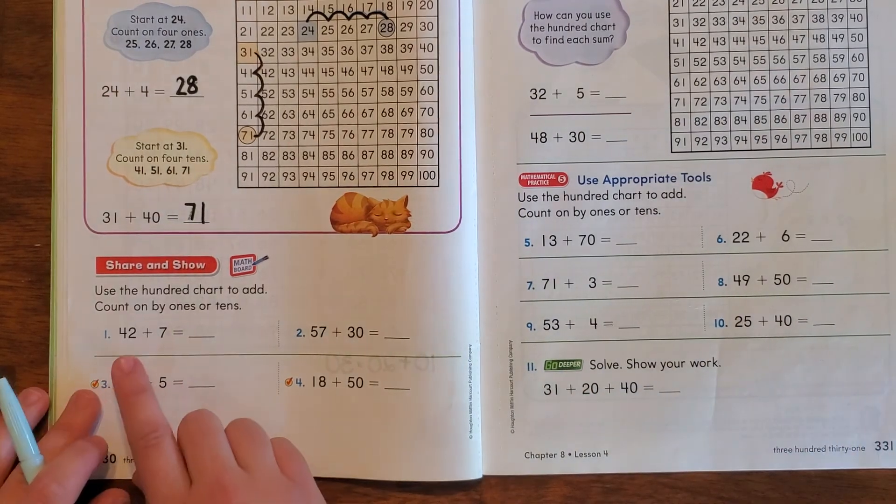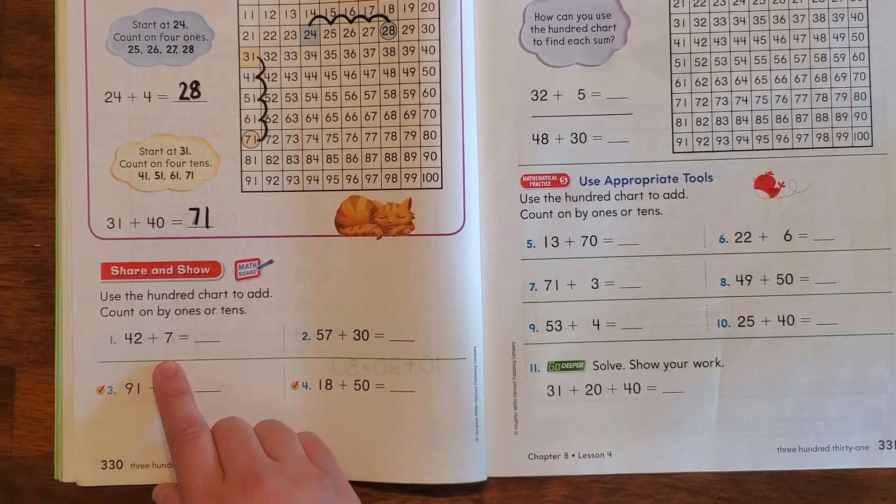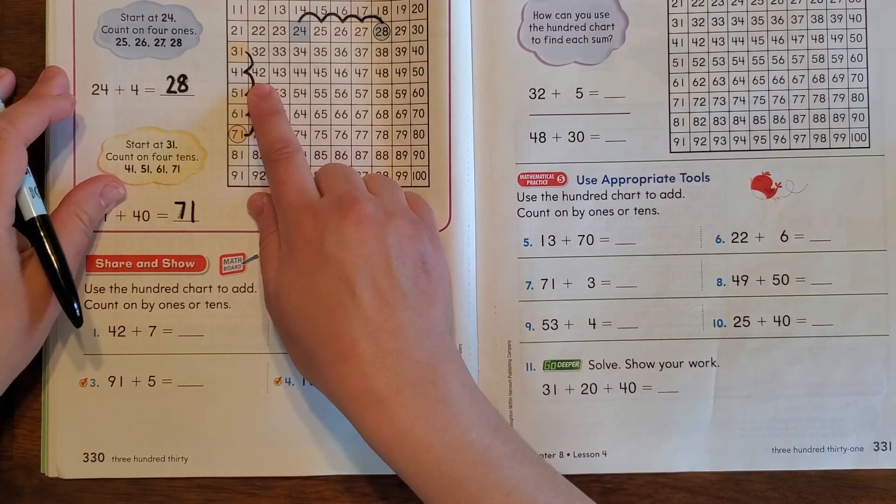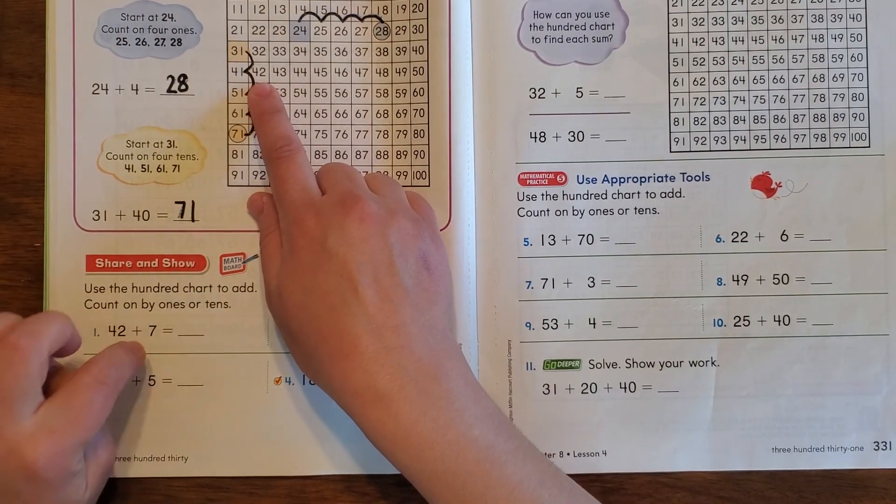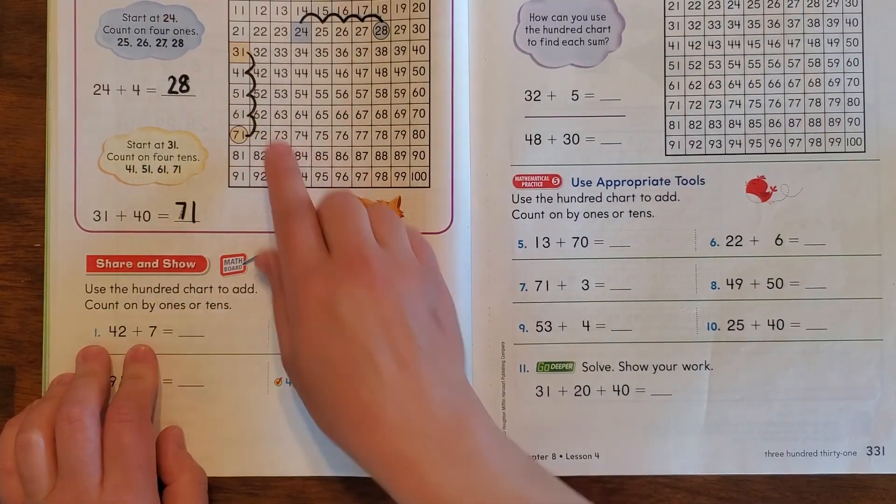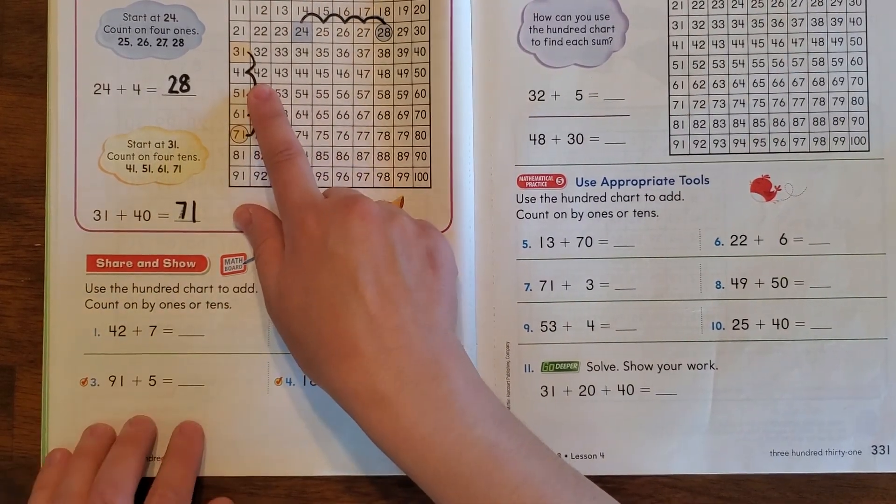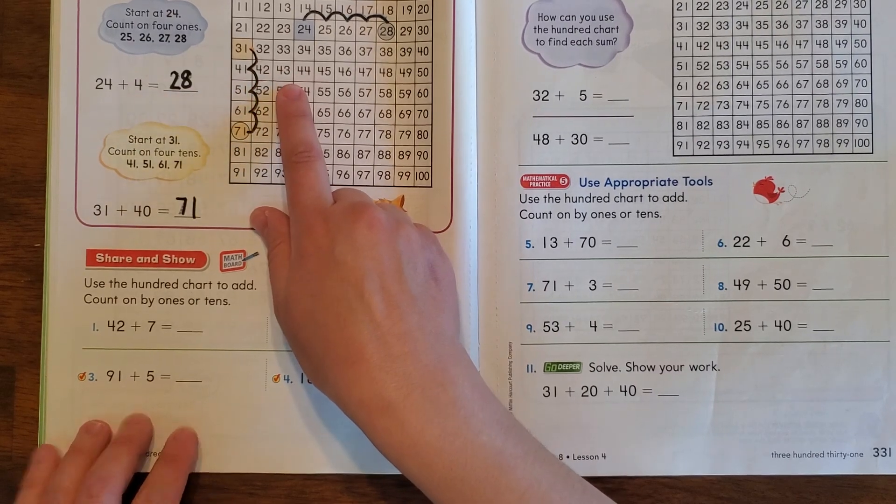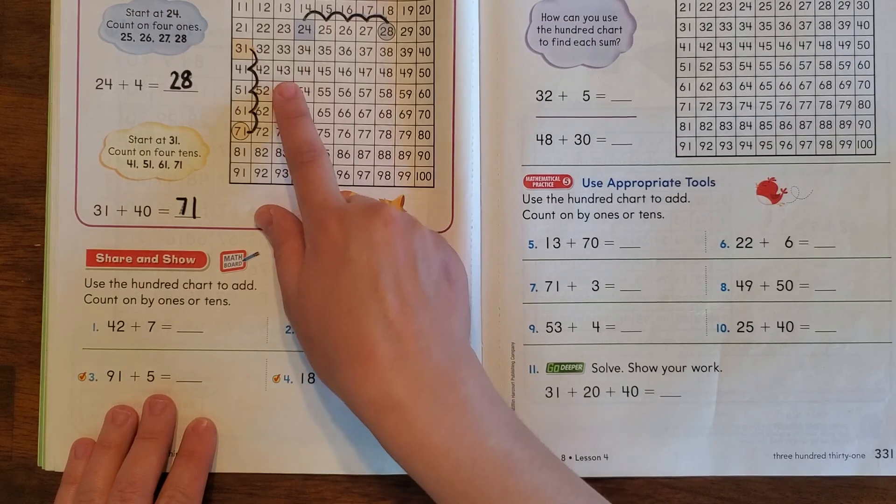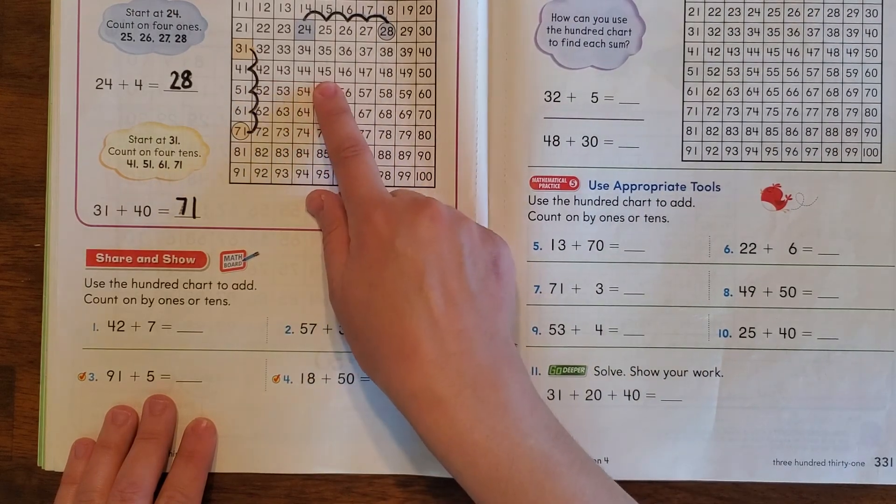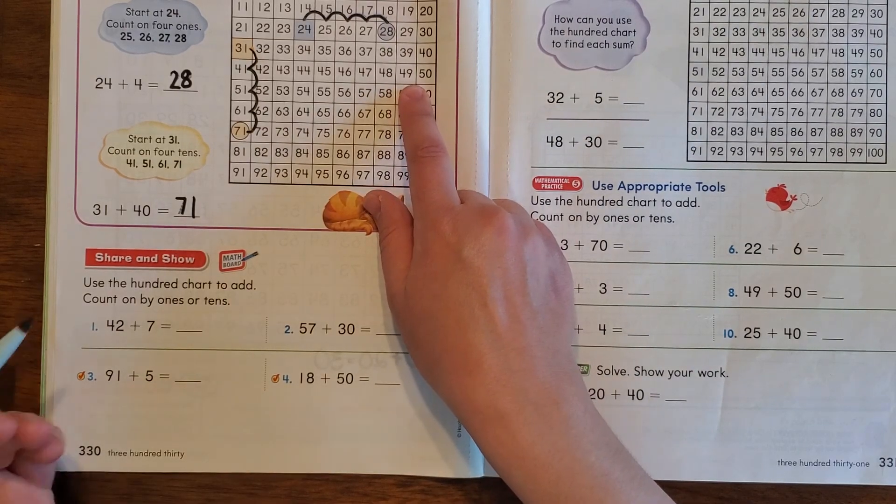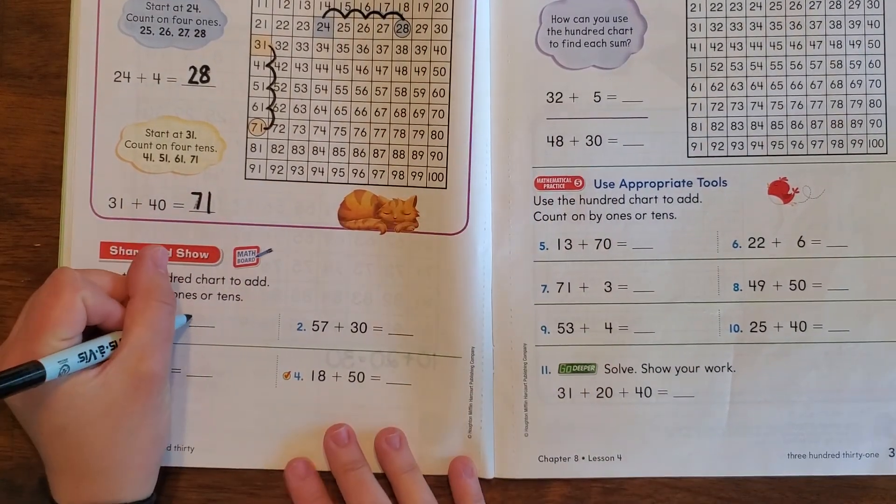All right, so 42 plus 7 more. We can find 42 on our number chart, and then we can just go over 7 more and see where we end up. So if we start at 42, the next number becomes one more, so 42: 1, 2, 3, 4, 5, 6, 7. Where do we land? That's right, we land on 49.